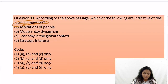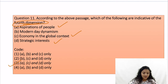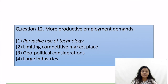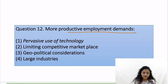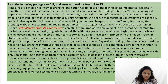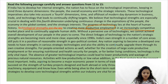Then we have question number 12: more productive employment demands. The keyword to keep in mind is 'productive employment demands.' The answer is also direct — technological strengths are the key to creating more productive employment in an increasingly competitive marketplace. So your answer will be 'technological strength.'